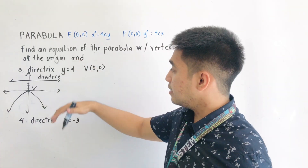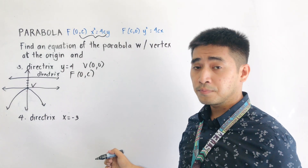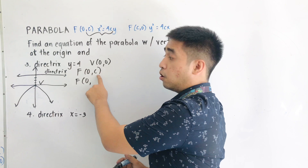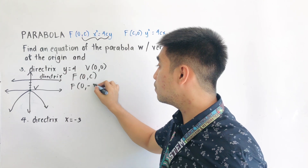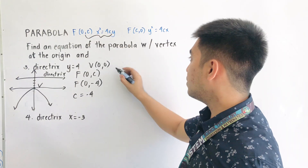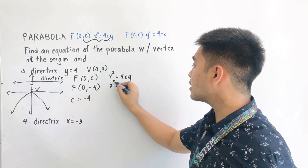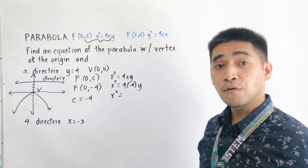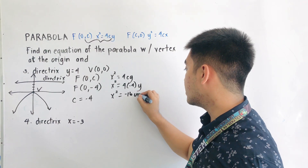Since it is opening downward, we should be using theorem 1 where the focus is located at (0, c). Therefore, the focus is located at (0, negative 4), because c is the opposite of the directrix value. If the directrix is y equals 4, therefore c is equal to negative 4. By using the formula x squared equals 4cy, substituting the value of c: x squared is equal to 4 times negative 4 times y, which gives us x squared equals negative 16y.